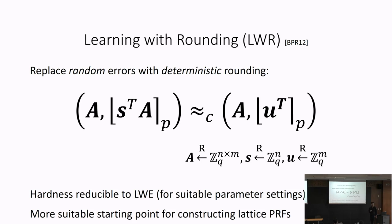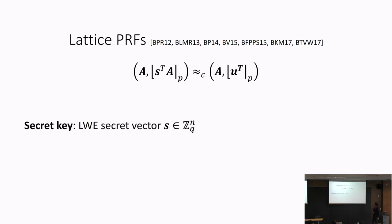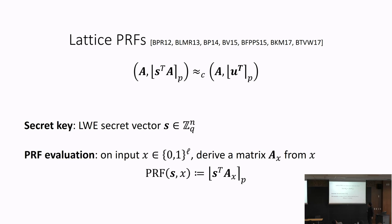To build a PRF from LWR: the assumption already has a pseudo-random function flavor — we have a quantity indistinguishable from something uniformly random, which is exactly what we want from a PRF. The intuition is to let the LWE secret s be the PRF secret key, and define A as a function of the input x. The PRF evaluation is basically s-transpose times A_x, where A_x is a matrix derived from the input. By LWR, this looks indistinguishable from something uniformly random.